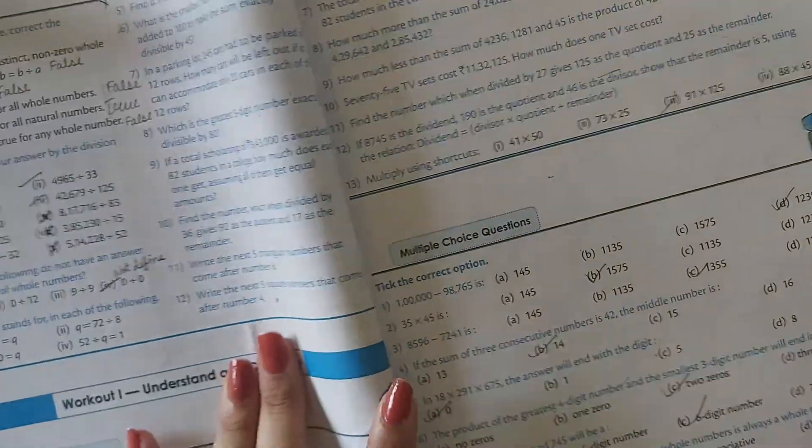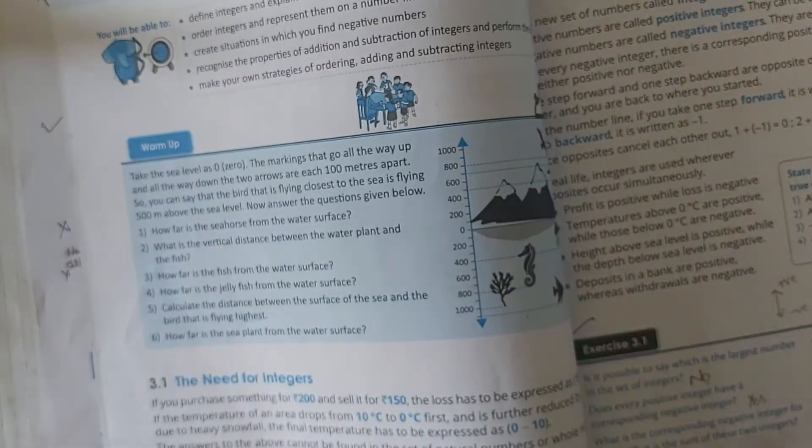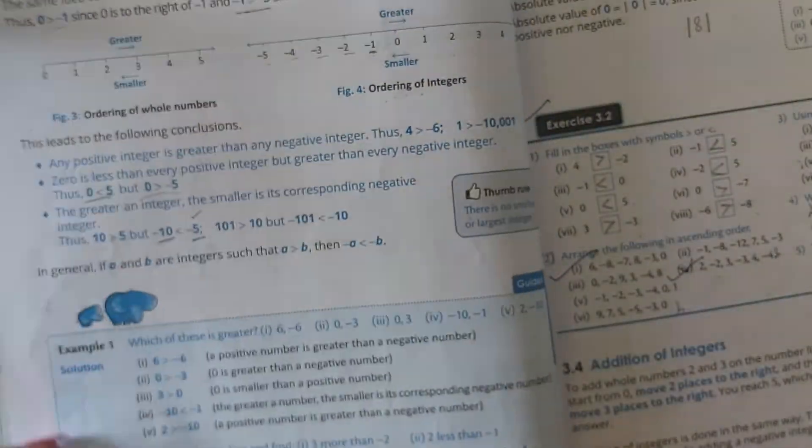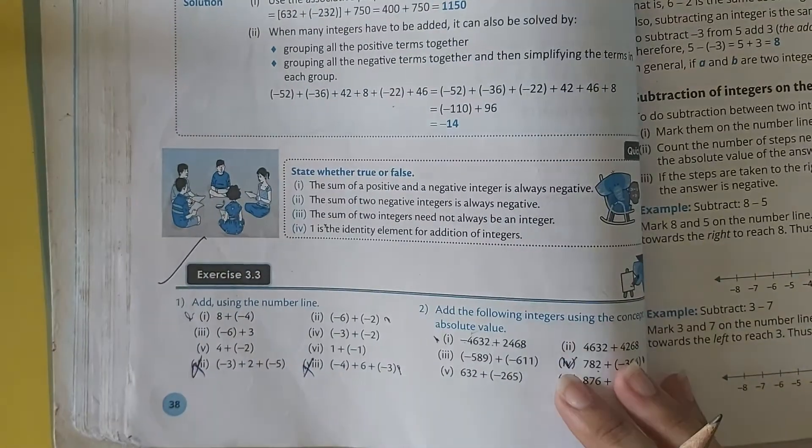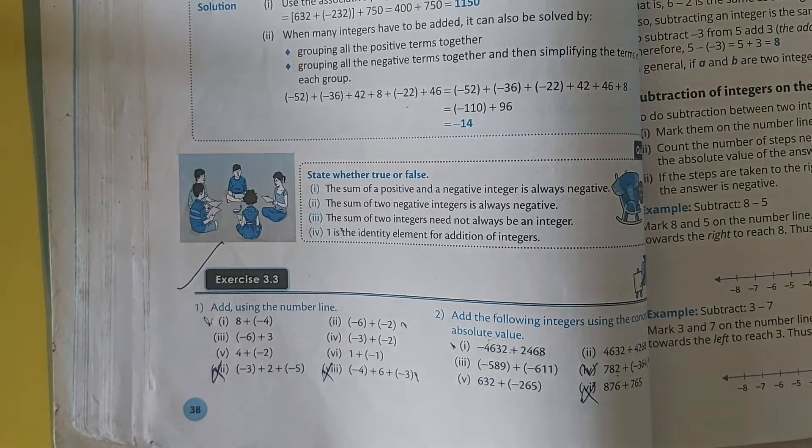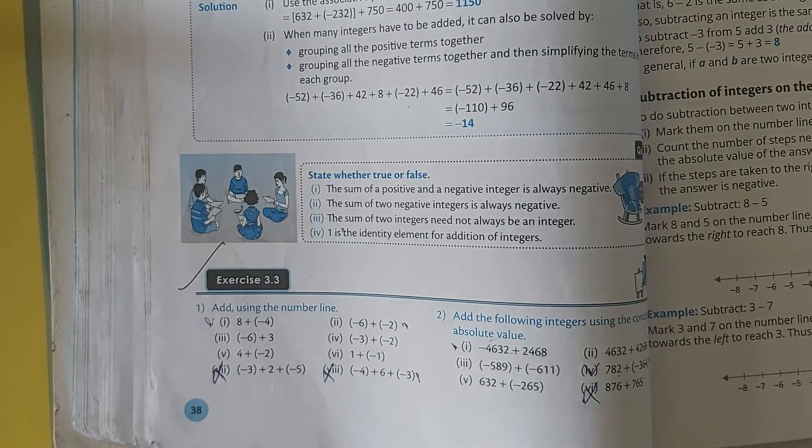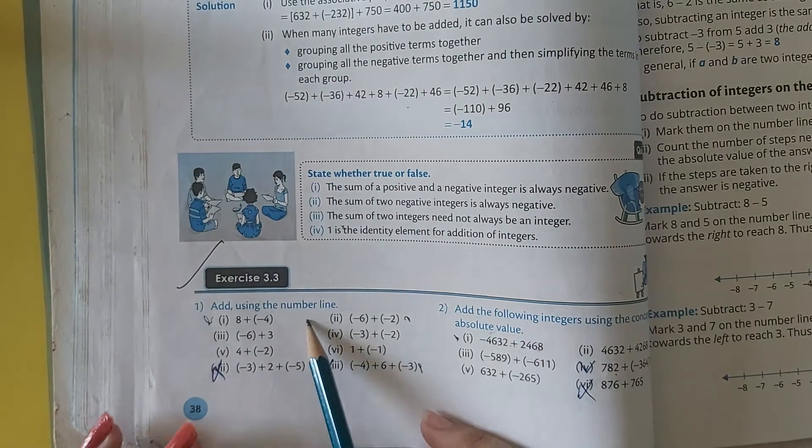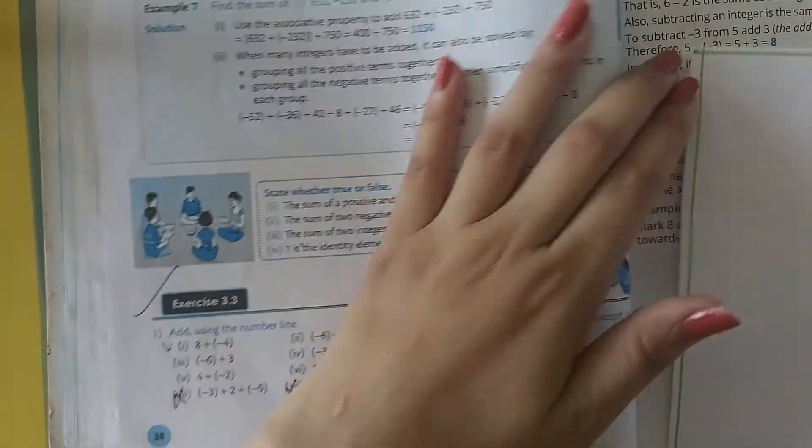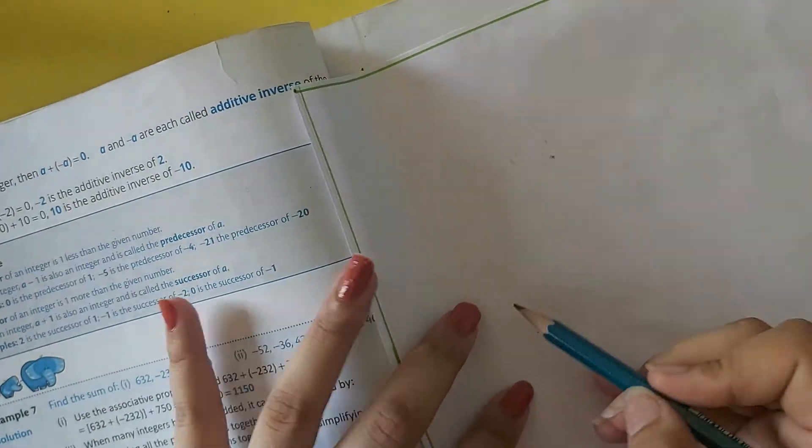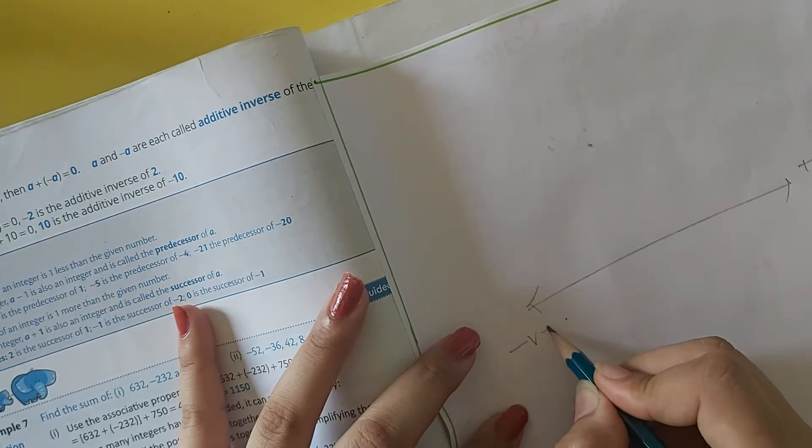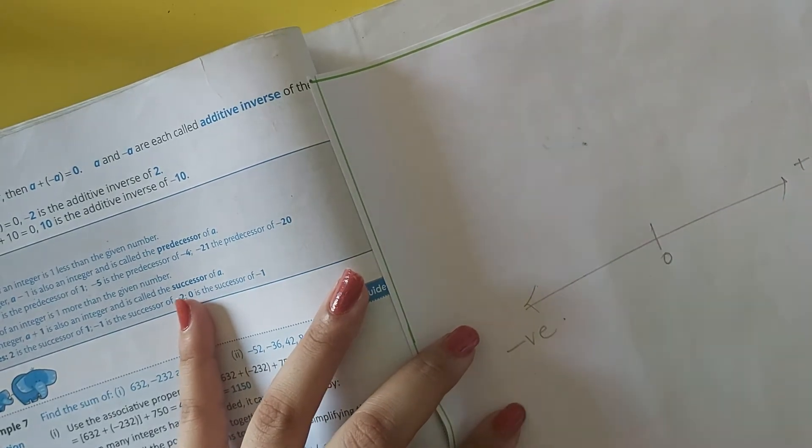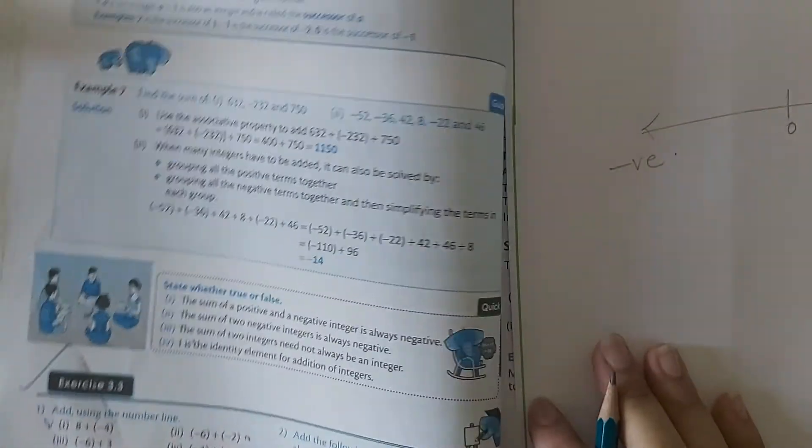Now, moving to our exercise, we have done 3.1 and 3.2. Moving to our next exercise which is 3.3. In exercise 3.3, what do we have to do? Add using the number line. Firstly, what is the number line? The number line is the line on which all the positive and negative numbers lie. In the center, there is 0. So what did they ask? Add using the number line.